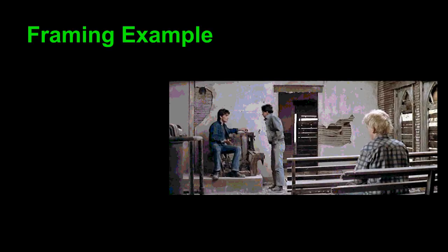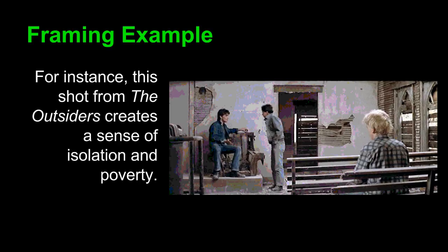Here's an example from The Outsiders. We can see that Ponyboy, Johnny, and Dally are sitting in a church that is quite run down and quite desolate. This can create a sense of isolation and poverty. The director obviously wanted to bring out how these characters are alone and without means.